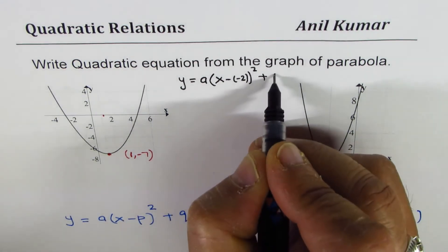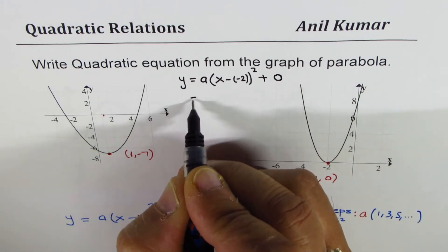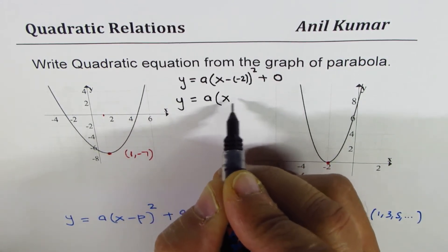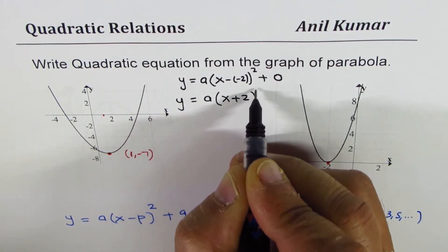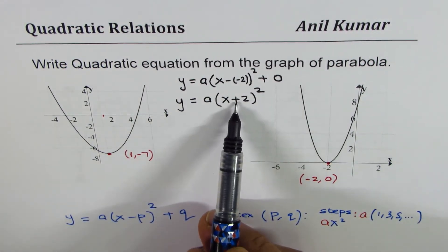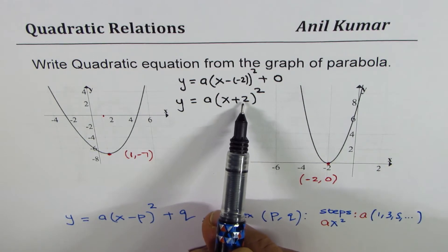If I do minus of minus 2 whole square plus q is 0, right, so I'm writing 0 here. In a way I get y equals to a times x plus 2 whole square.